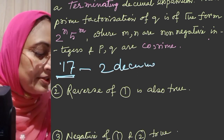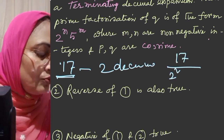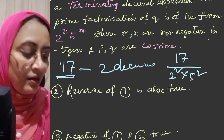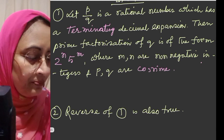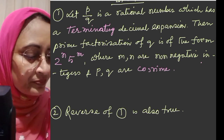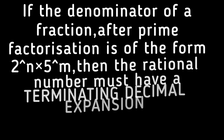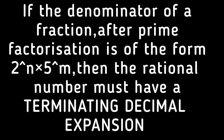We can write 17 by 100 as 17 by 2 squared into 5 squared. The reverse is also right. That means: if P by Q is a rational number where, after prime factorization, Q can be written in the form 2 to the power n into 5 to the power m, then the rational number has a terminating decimal expansion.